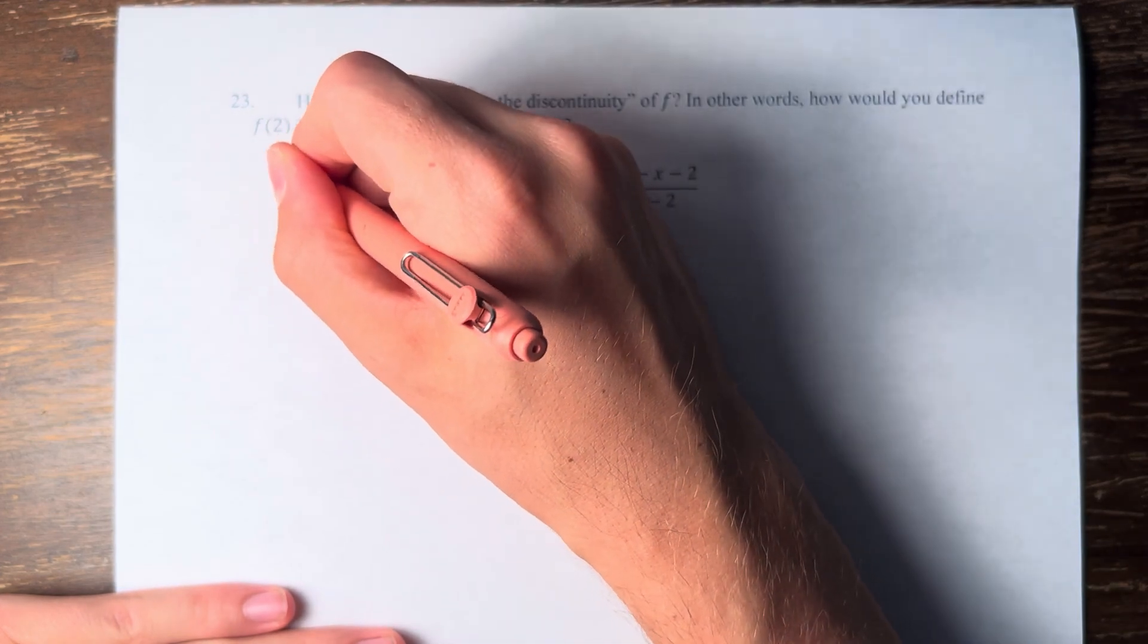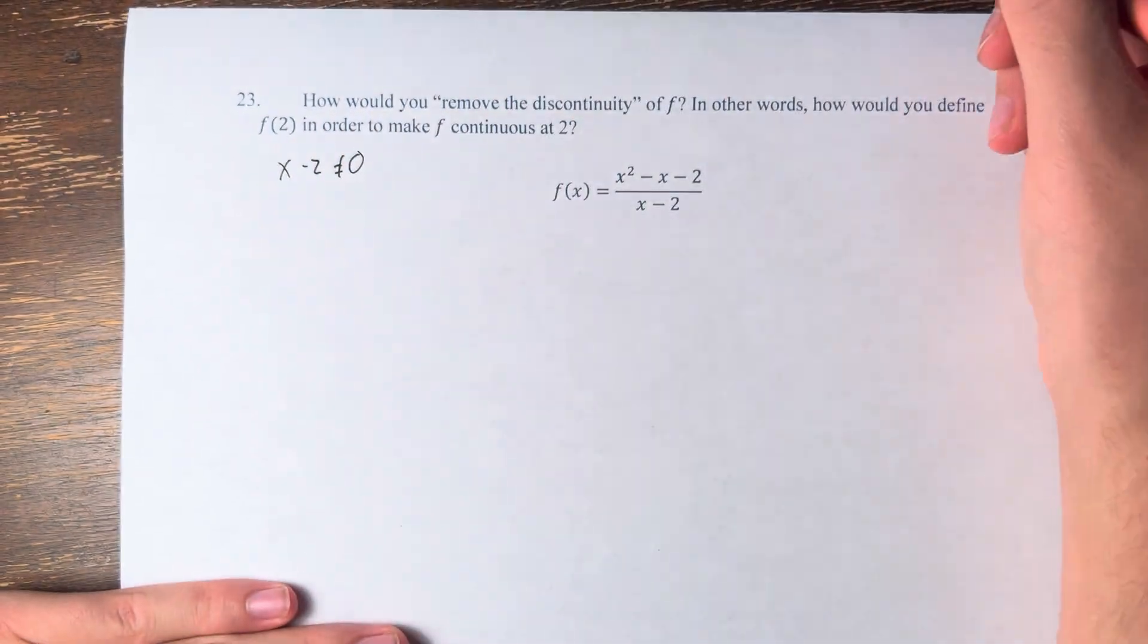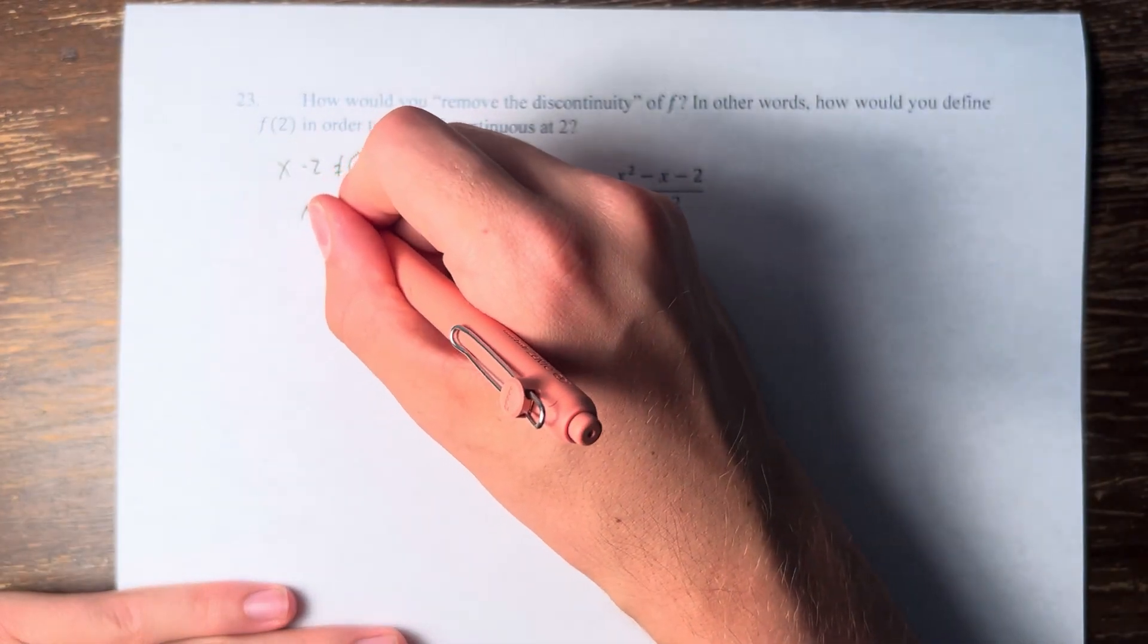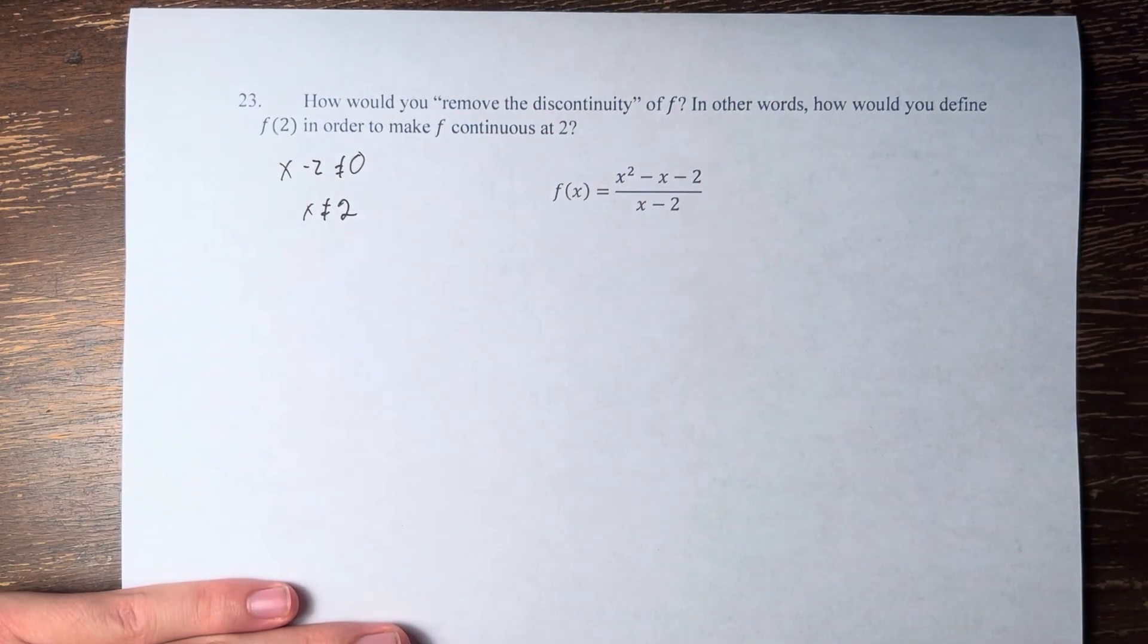Here, x minus 2 cannot be equal to 0, otherwise we'd be dividing by 0. Therefore, x cannot equal 2, and this is why we have the discontinuity.